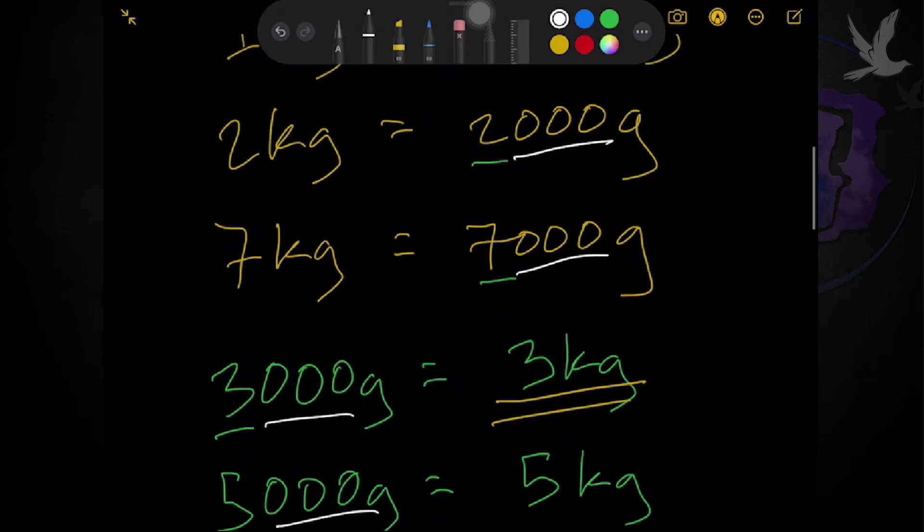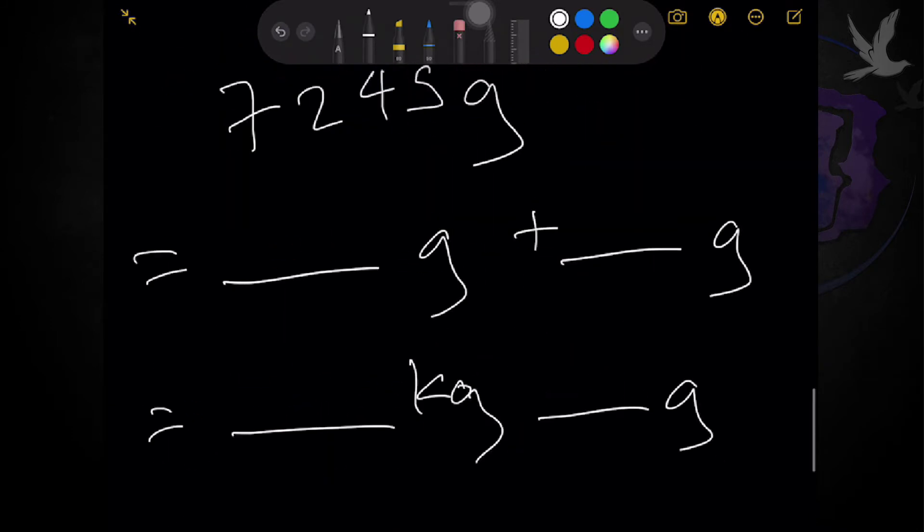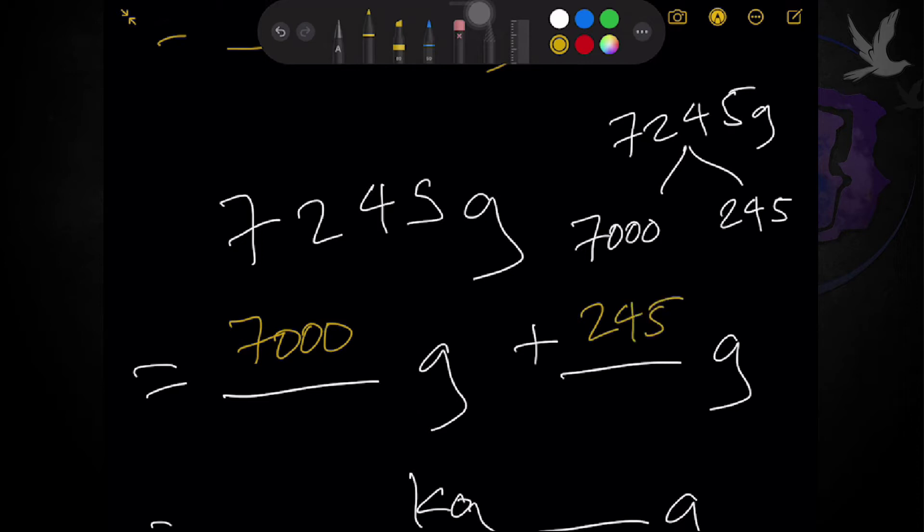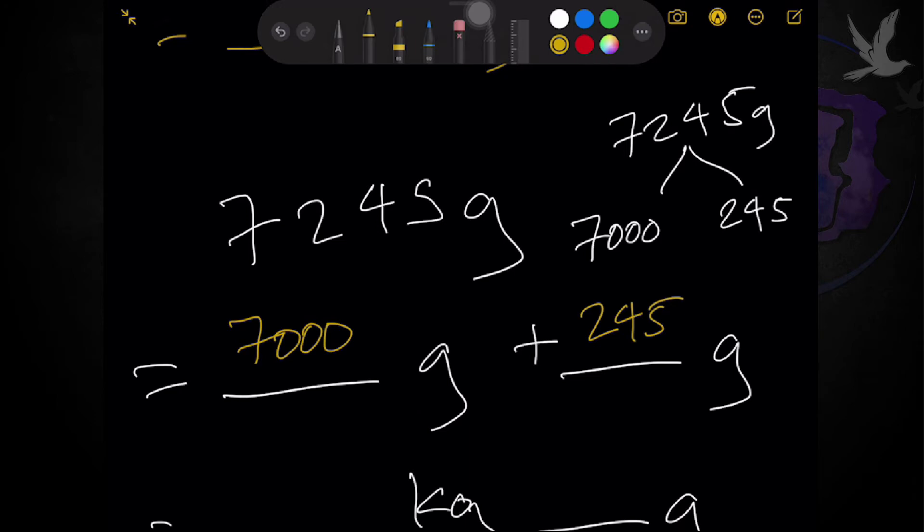Diba? So, thousands tayo. So, since thousands, again, we are separating 7,245 by 1,000. So, this becomes 7,000 and this becomes 245. So, we now have the unit of 7,000 here. And 245 here. Okay. Kasi ni-breakdown natin like what we did earlier yung sa length.